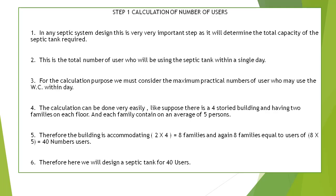The calculation can be done very easily. Suppose there is a four-storied building having two families on each floor, and each family contains on average five persons. Therefore the building accommodates 2 × 4 = 8 families, and 8 families × 5 persons = 40 users. Therefore here we will design a septic tank for 40 users.